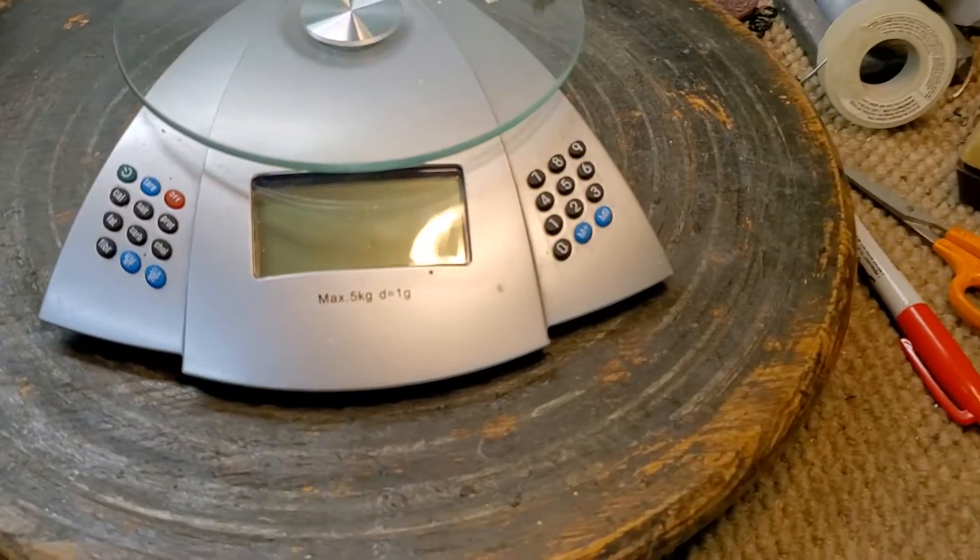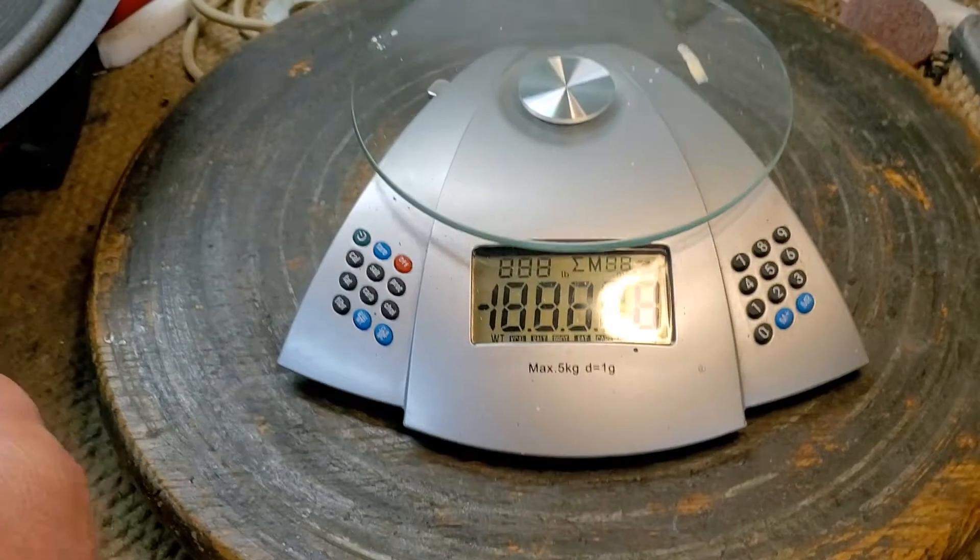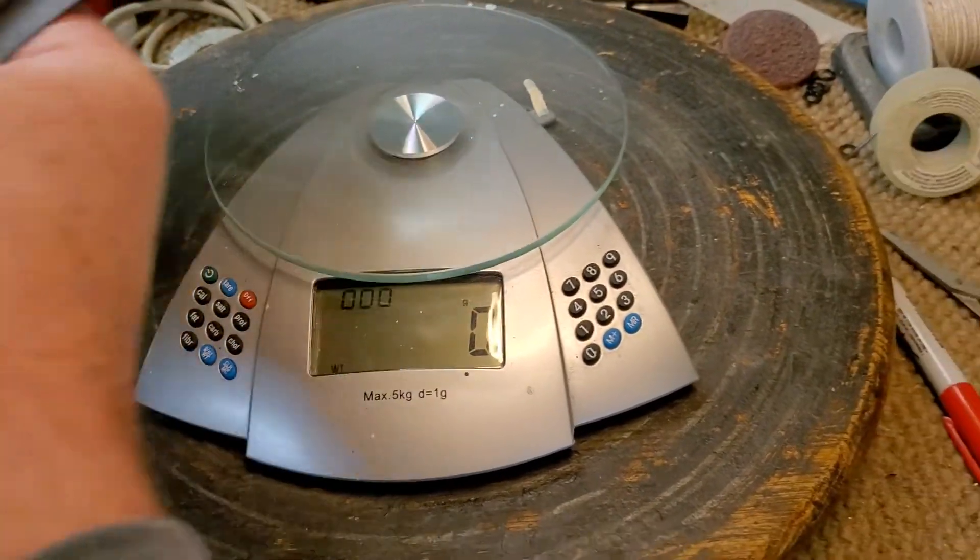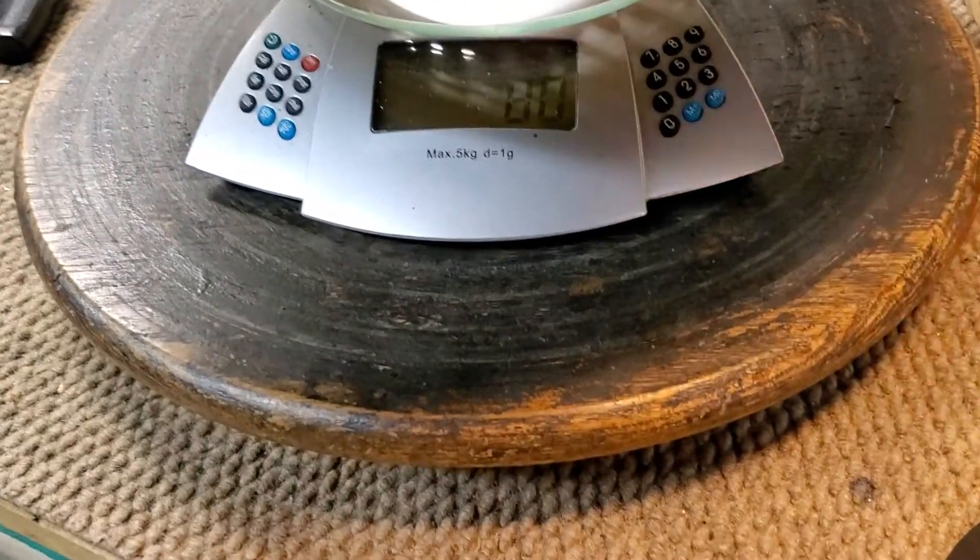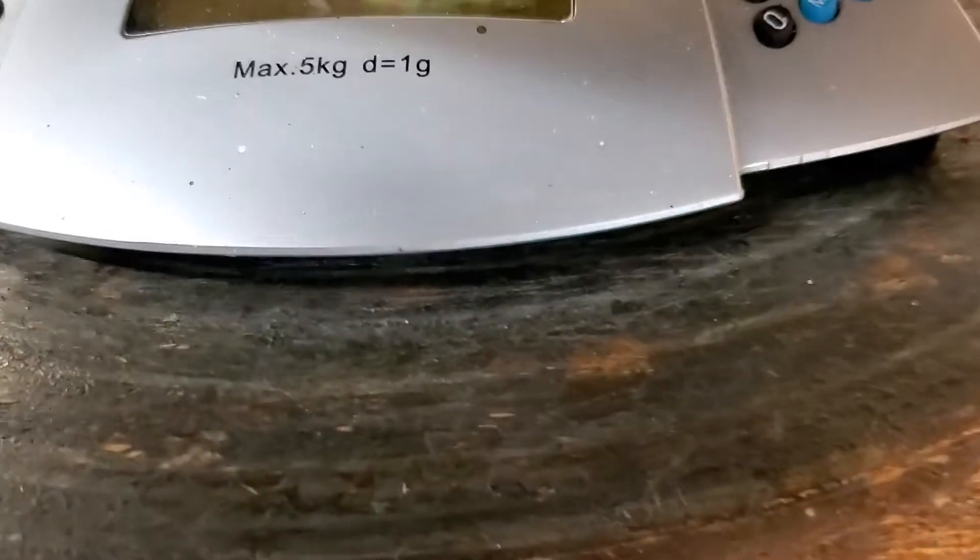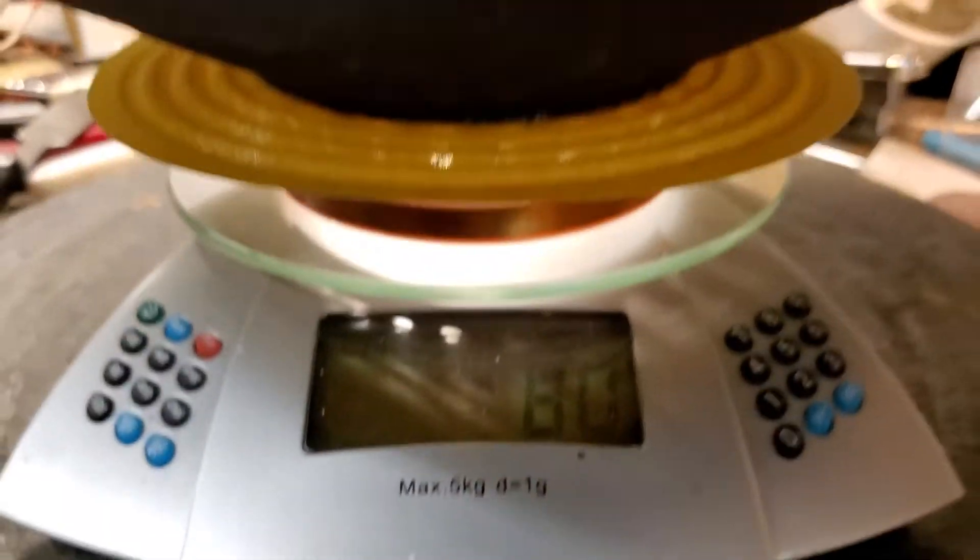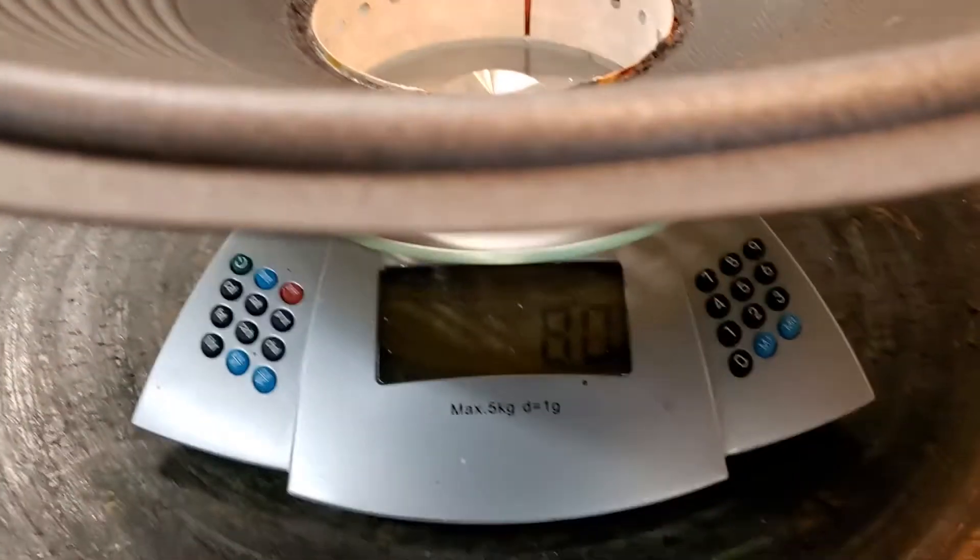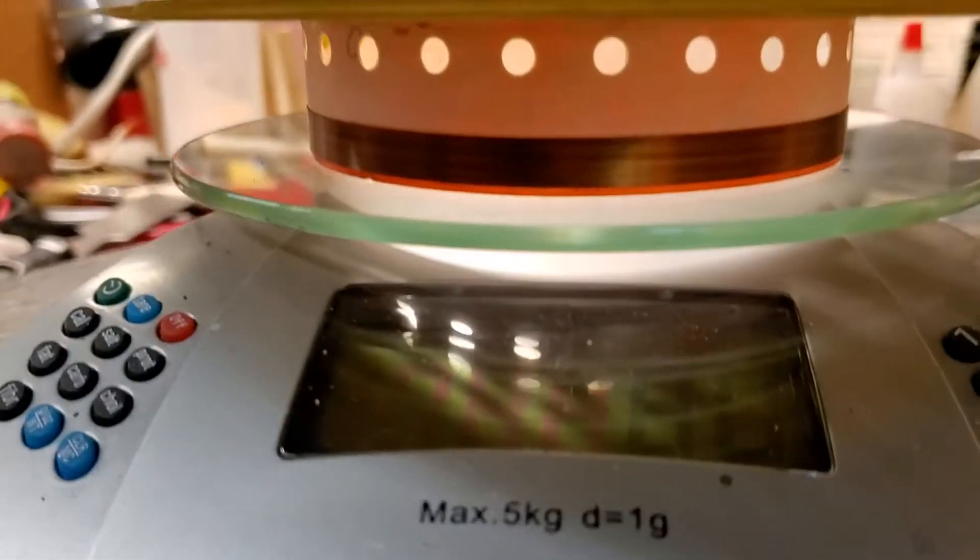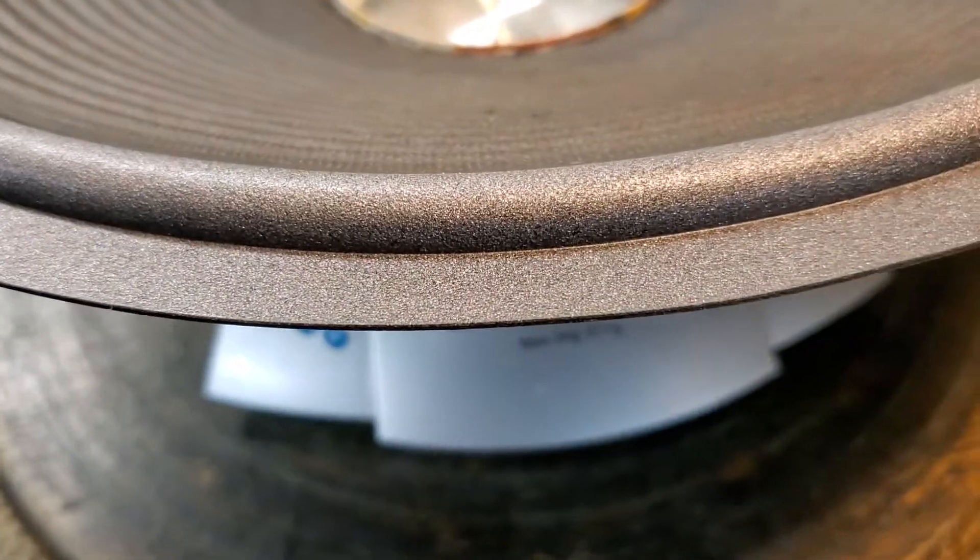This particular one, we start out with the cone which you can see is 80 grams. Then we subtract half of the weight of the surround and the spider. The surround weighs 14 grams, the spider weighs 4 grams, so 14 and 4 is 18, so half of that is 9.